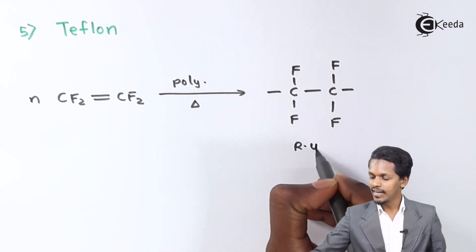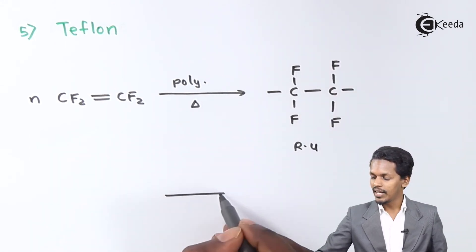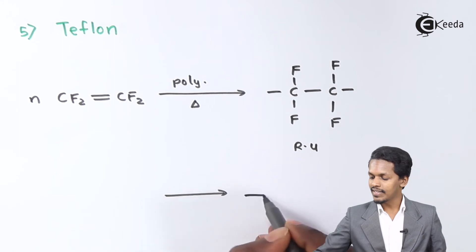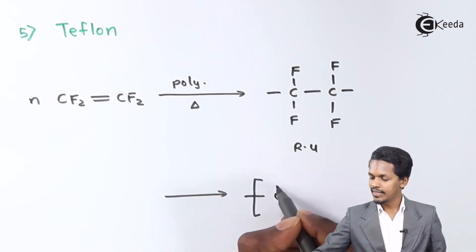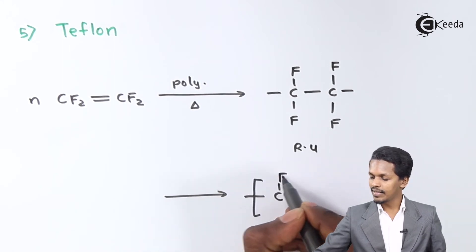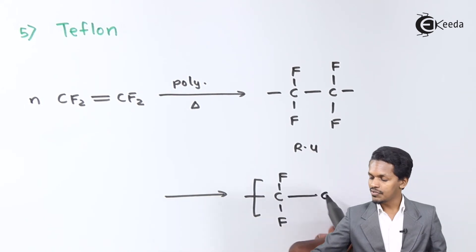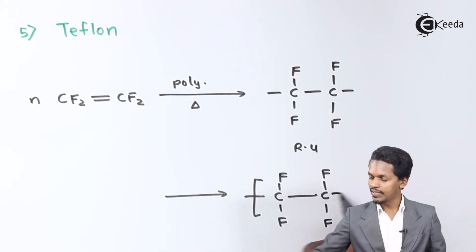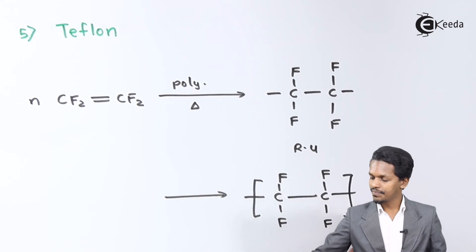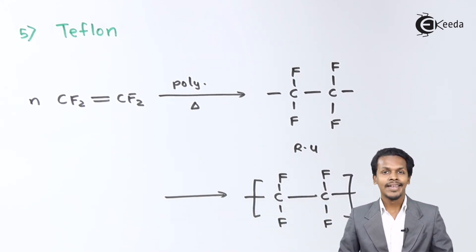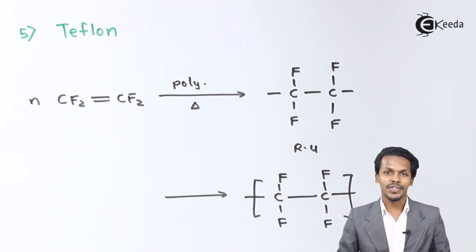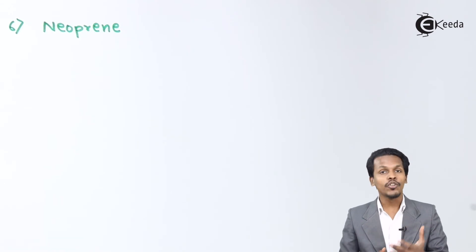The combination of various repeating units gives the final product — the structure of Teflon — which is –CF2–CF2– repeated n times.